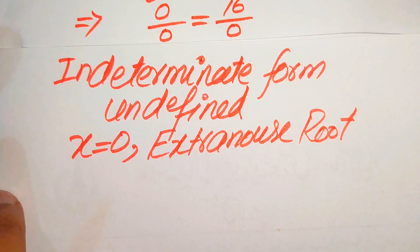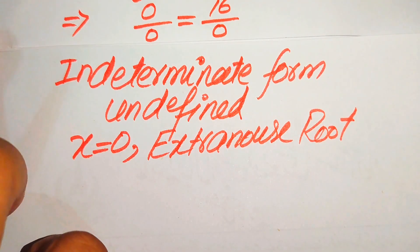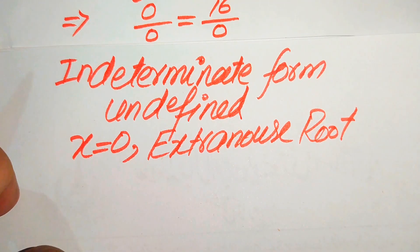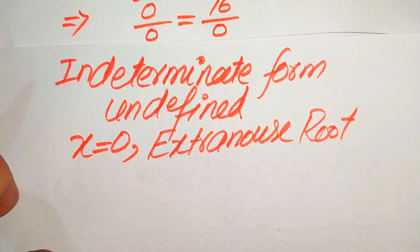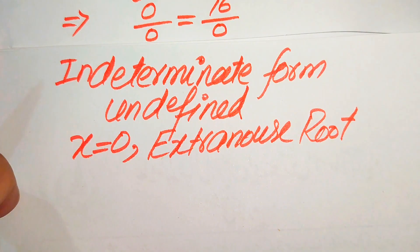So we have two solutions: x equals plus or minus 4 are the solutions of the given equation, and x equals 0 is the extraneous root.